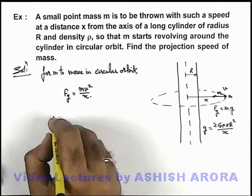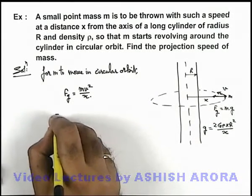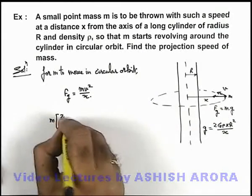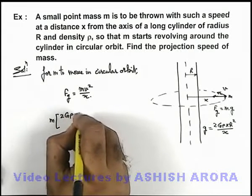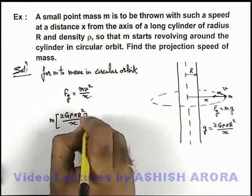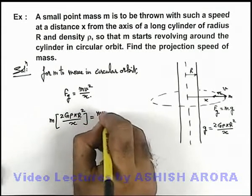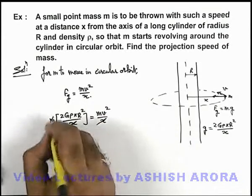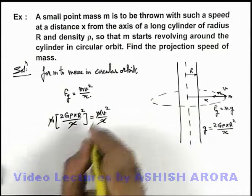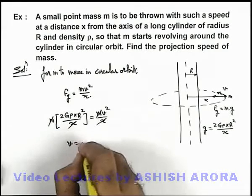If we substitute it here, this can be given as mass multiplied by gravity, which is 2 G ρ π R squared by x, and it should be equal to m v squared by x. Here x gets canceled out, m also gets canceled out.